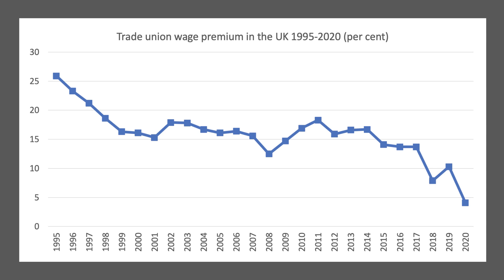The premium that unions get — the gap between the average wage of a union member and a non-union member — has come down since 1995. Union density was about 33% and the premium was pretty high at about 25%, so on average a union member was getting 25% more pay than a non-union employee. That has come down over the years — in 2020 it was just below 5%. So trade unions in the UK are getting one of the lowest wage premiums for many years, and that might indeed be a reason why union membership continues to stay low.